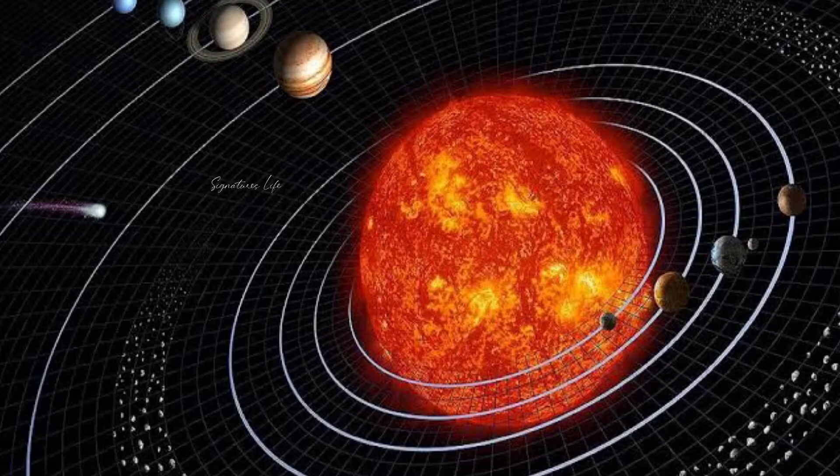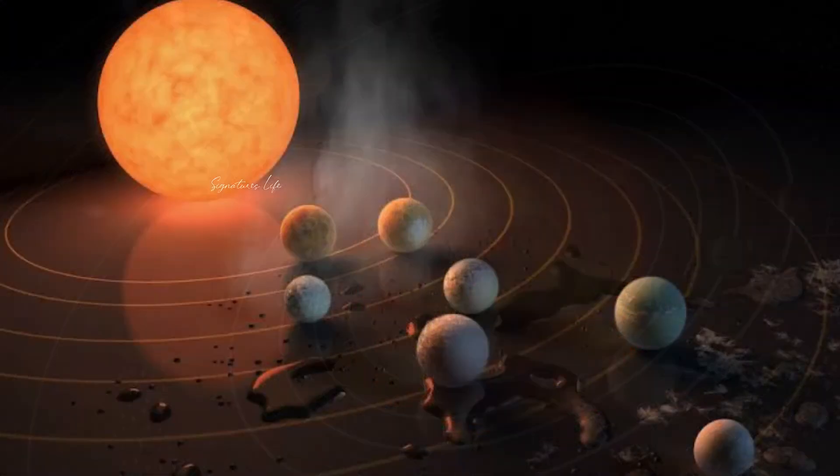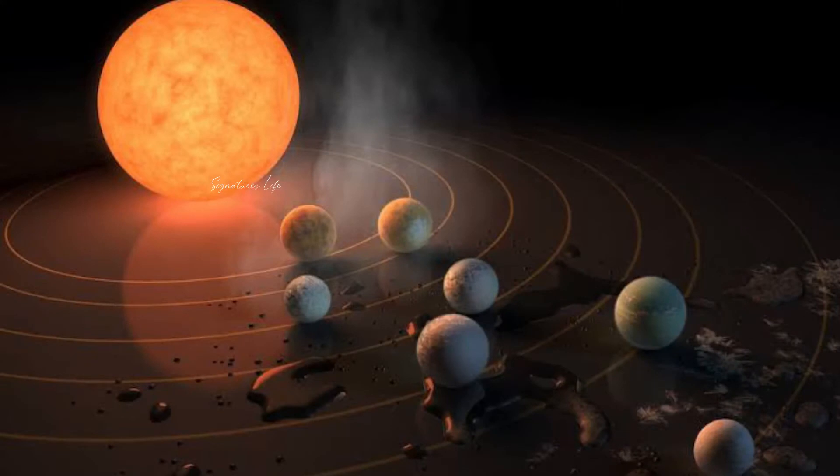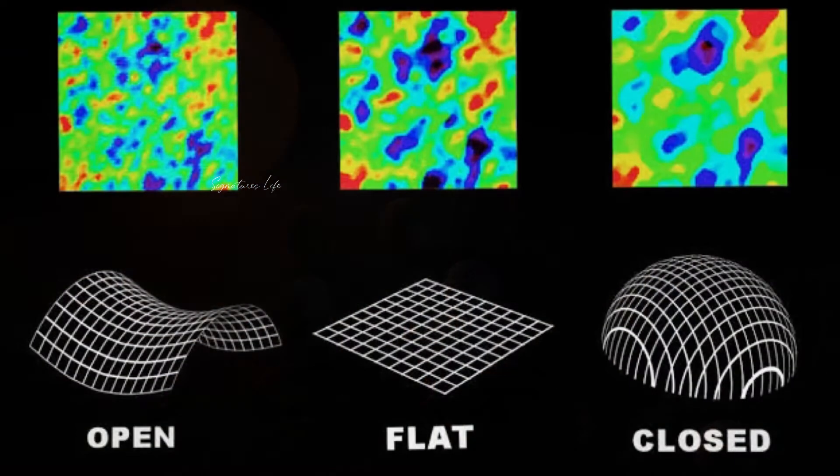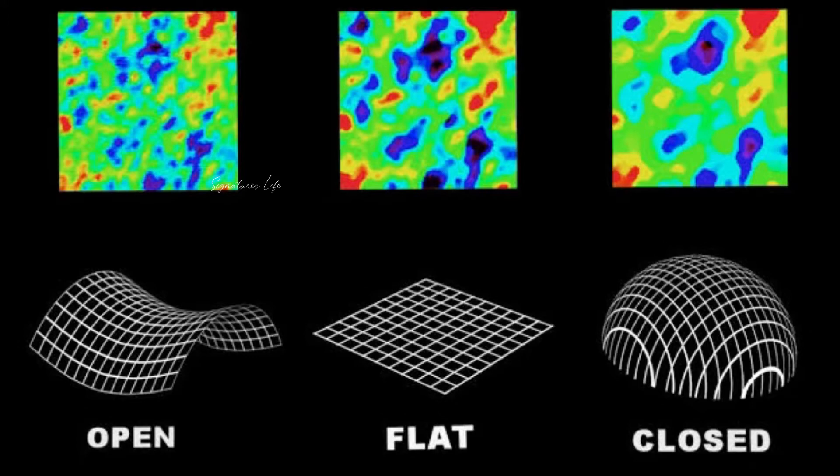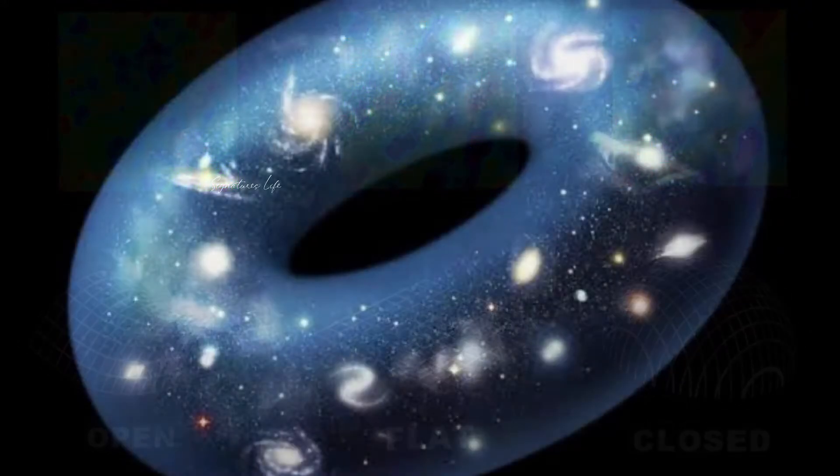The theory of general relativity, under which space itself can curve, allows for the universe to take one of three forms: flat like a sheet of paper, closed like a sphere, or open like a saddle.